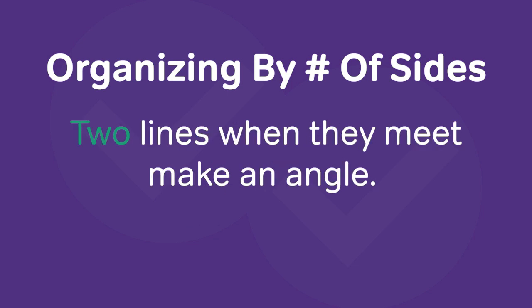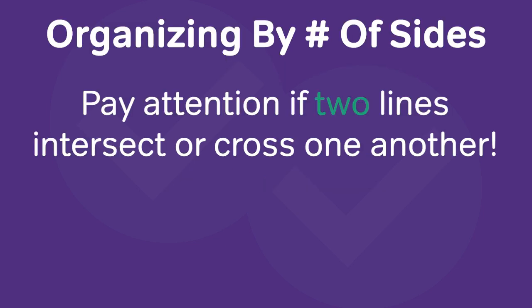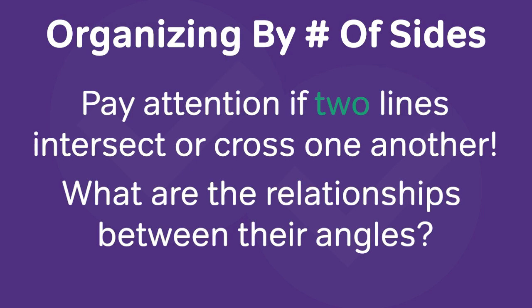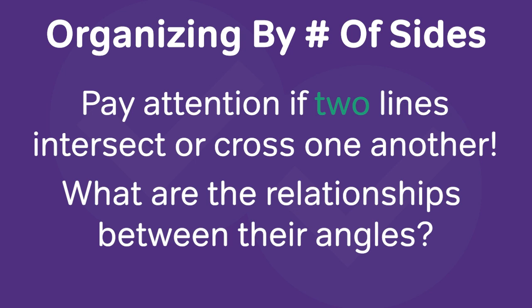Two lines when they cross make an angle as well, and so you want to pay attention to when two lines intersect each other, what kind of angle properties and relationships there are. Three lines together makes a triangle, and that's one of the most important shapes you can study for the exam. Standardized tests love triangles because there are some special properties to them. Especially, you want to pay attention to what's called special right triangles,